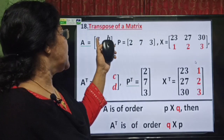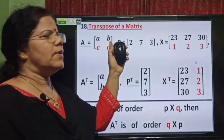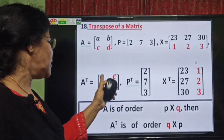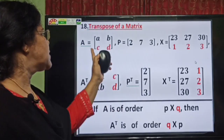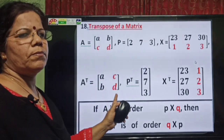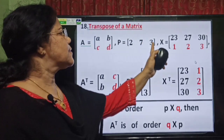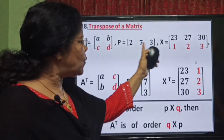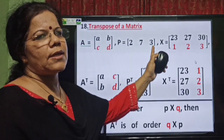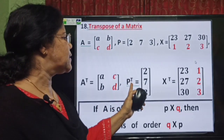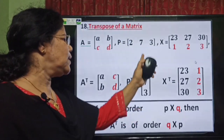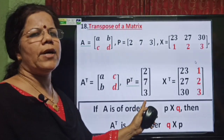Here, A-B is a row in matrix A. In A-transpose, A-B becomes a column. C-D is the second row; it becomes the second column. Here P is a row matrix with a 1×3 order, and P-transpose is a column matrix with 3×1 order.